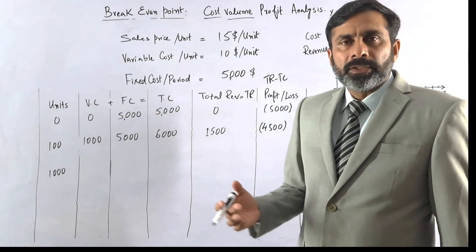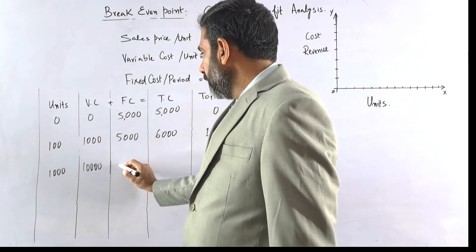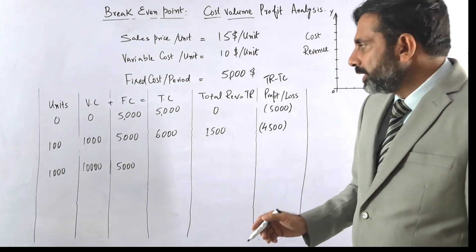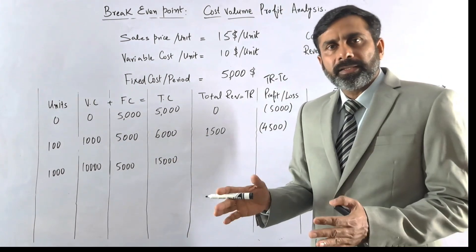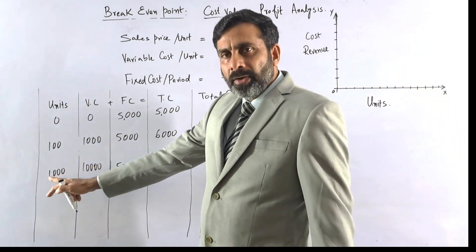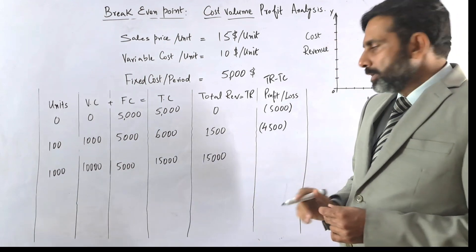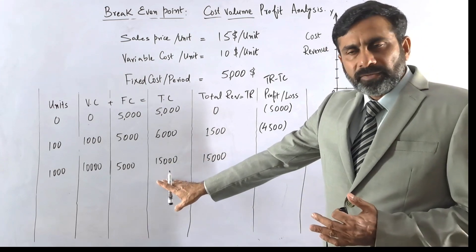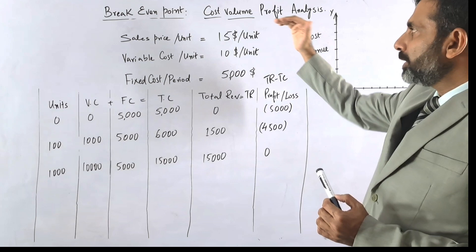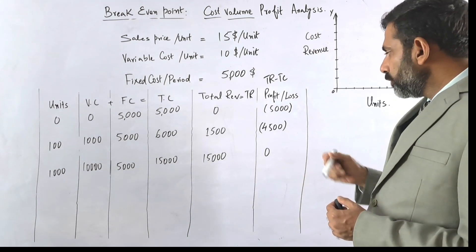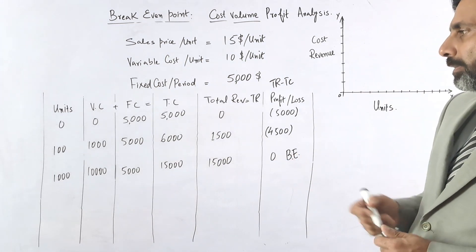Now assume 1,000 units. Variable cost is 1,000 × $10 = $10,000. Fixed cost is still $5,000, so total cost is $15,000. Total revenue is 1,000 × $15 = $15,000. Revenue equals cost, so it is zero — no profit, no loss. This is the breakeven point, consistent with our previous calculations where the answer was 1,000 units.